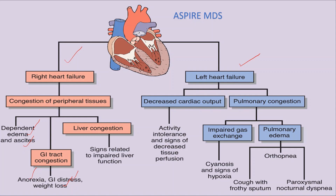In left-sided heart failure, there are two main effects. First, because the blood cannot pass from the left ventricle to the systemic body parts through the arch of aorta and further arteries, decreased cardiac output occurs. This leads to activity intolerance and signs of decreased tissue perfusion, such as hypotension.